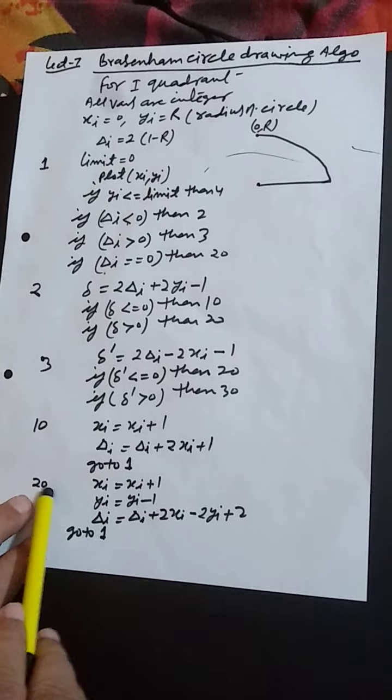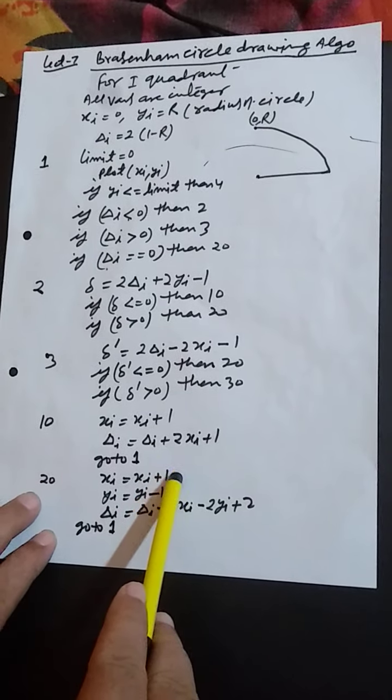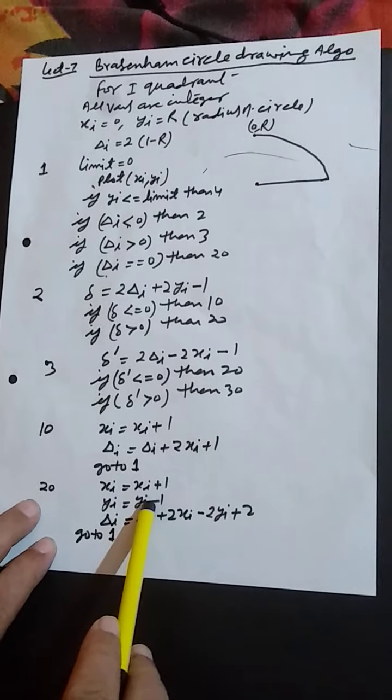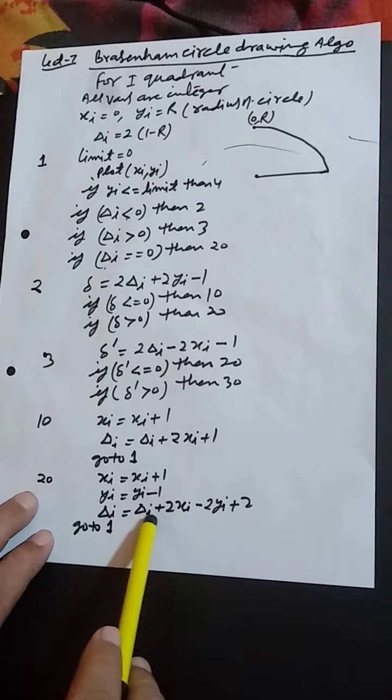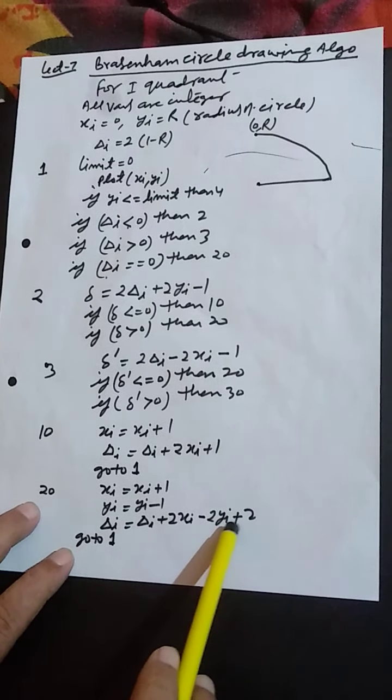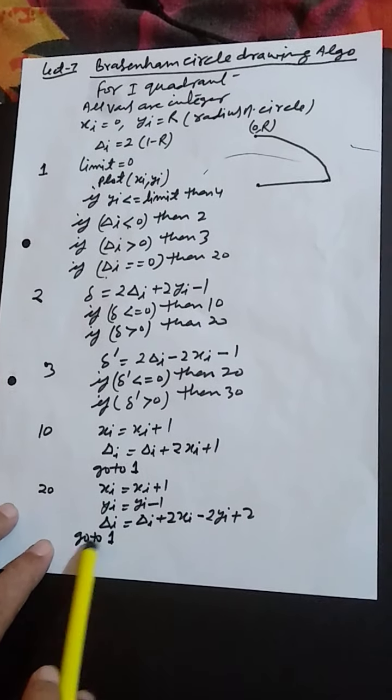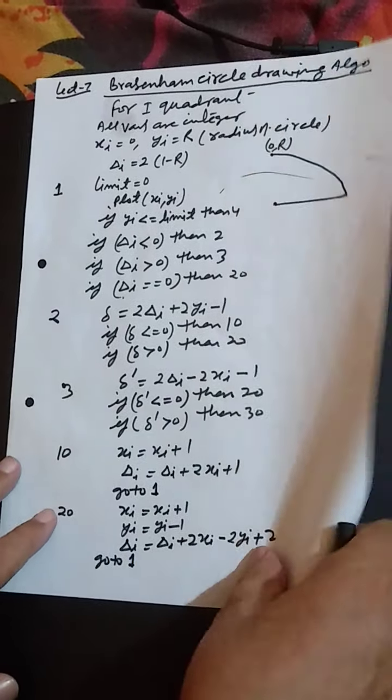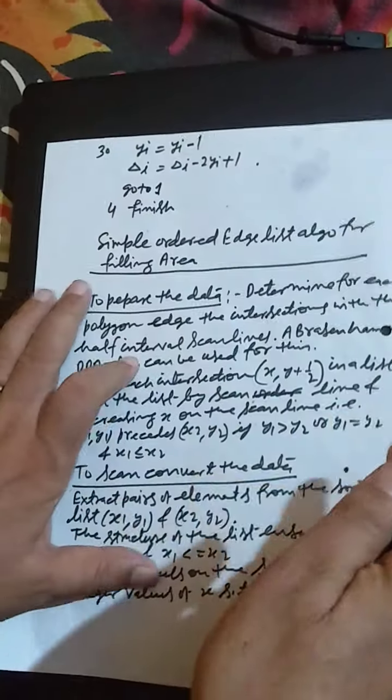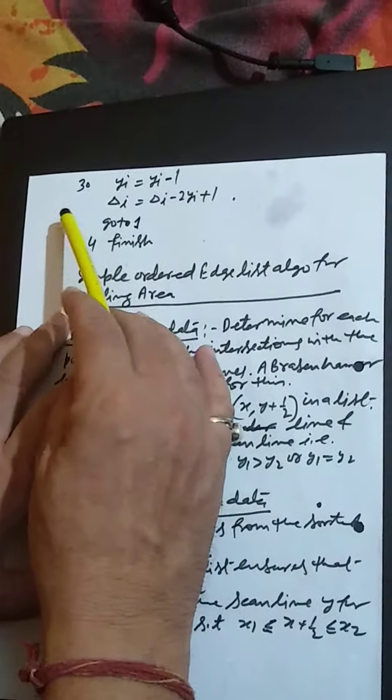At level 20, xi equal to xi plus 1, yi equal to yi minus 1, delta i equal to delta i plus 2xi minus 2yi plus 2, go to 1.